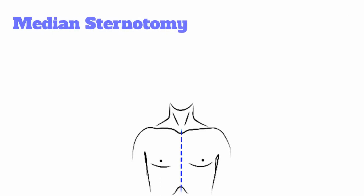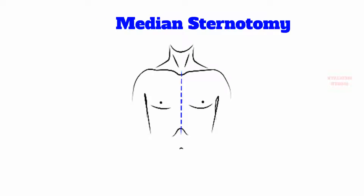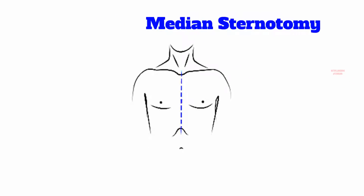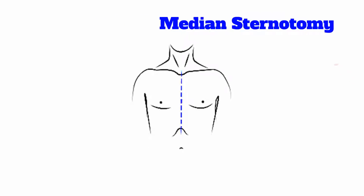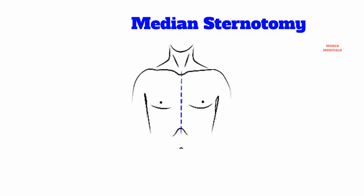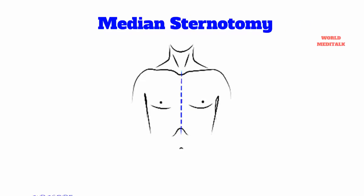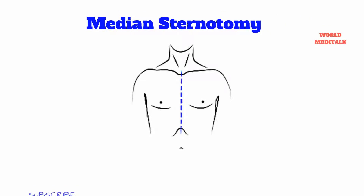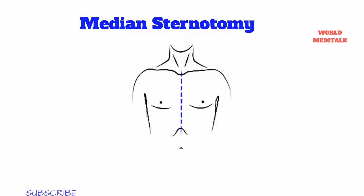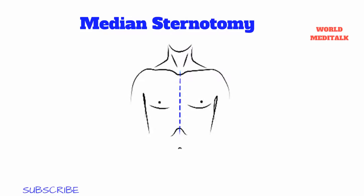Thoracic incisions. The median sternotomy incision is most commonly used to approach the heart. The patient is placed supine with the neck extended. It is a midline incision which extends from 2 cm below the sternal arch up to the xiphoid process.